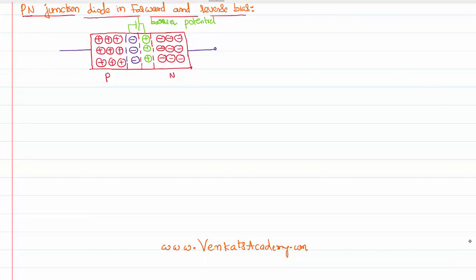As the charges cannot overcome this barrier potential themselves, there is no flow of charges, so the device behaves like an insulator. To make it pass current, we need to give a way for the electrons and holes to overcome this barrier potential — that means we shall connect a battery. The battery will give enough energy for the charges to travel from one side to the other. When you connect the battery, there are two ways of connecting it. For example, you can connect the positive plate of the battery to the P type material and the negative plate to the N type material. From here, positive charges start moving.